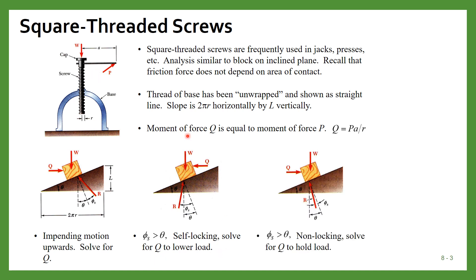There is another case where if you put on the load, it will automatically try to unwind and lower the load. In that case you have to apply force in the opposite direction so that the weight does not come downward. That will occur when phi_s, the angle between the resultant and normal, is less than the angle theta. In that case you have to solve for the force Q to hold this weight so it will not come down automatically. This is how we can solve problems related to square-threaded screws used in jacks and presses.